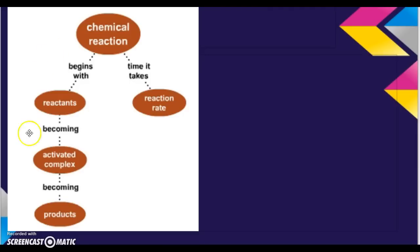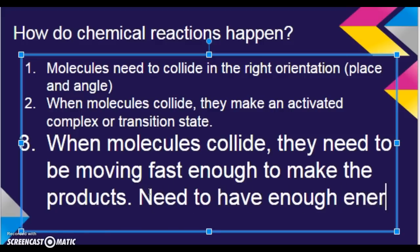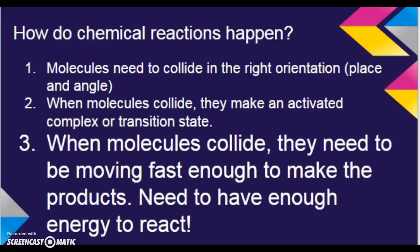So, chemical reactions begin with reactants. They become the activated complex or transition state for just a split second in the middle. Then, they can finish reacting and separate if they need to and become the products. So, how do chemical reactions happen? Number one, molecules need to collide in the right orientation, the right place and angle. When molecules collide, they make an activated complex or transition state or that middle glob where all the chemicals are together in a big mess in between being reactants and products. And the third thing is, when molecules collide, they need to be moving fast enough to make the products. So, they need to have enough energy to react. That's crazy important because if there's not enough energy, they just kind of bump into each other and nothing happens. They need the energy to actually perform the activated complex or transition state and then become products.